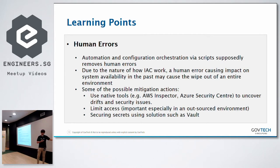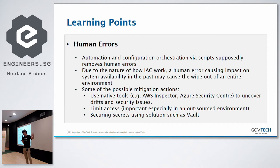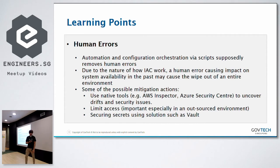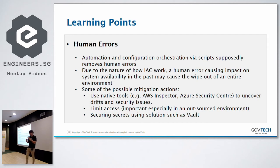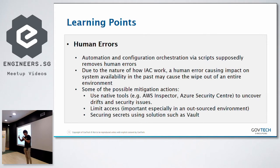For mitigation, we need to use a lot of other automation tools and cloud resources. Use Inspector on AWS; set up alerts. On Azure, use Azure Security Center. And limit access — in an enterprise environment with a partner-vendor relationship, the access control and things like that have to be properly managed.